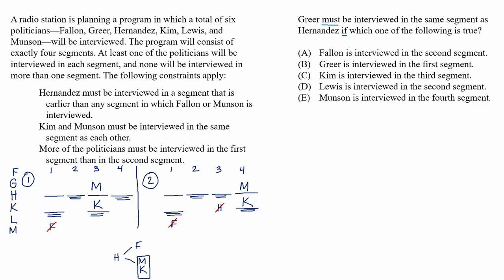A, Fallon is interviewed in the second segment. We can use scenario one to see that this doesn't force Greer and Hernandez to be together. In scenario one, Fallon could be interviewed in the second segment, and then we could put Greer alone in segment four while Hernandez and Lewis are together in segment one.